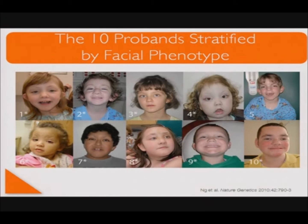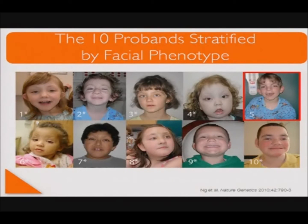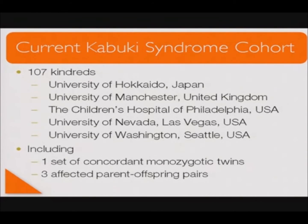Here are photos of the 10 probands from which the exome data was generated, stratified by their facial phenotype. Only one individual, outlined in the red box, did not have an MLL2 loss-of-function or truncating variant by either method of sequencing. We needed to verify our results in a large cohort, so we reached out to an international group of collaborators who had also collected cohorts of individuals with Kabuki syndrome. This study is an example of how working together can solve problems in rare disorders and ultimately benefit our clinical patients.